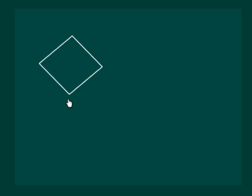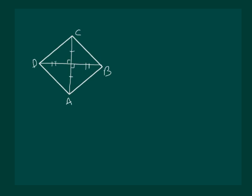Let us consider a rhombus. We know that in a rhombus adjacent sides are equal and the diagonals are perpendicular bisectors of each other, meaning the diagonals are perpendicular to each other and they bisect each other. Let us name its vertices a, b, c, d and let o be the point of intersection of the diagonals.